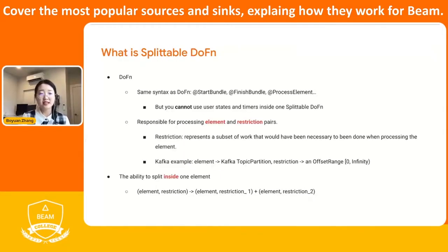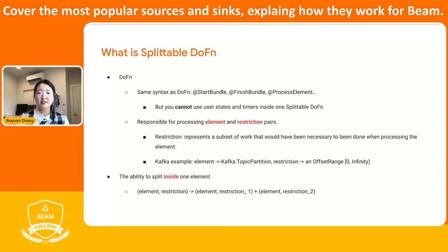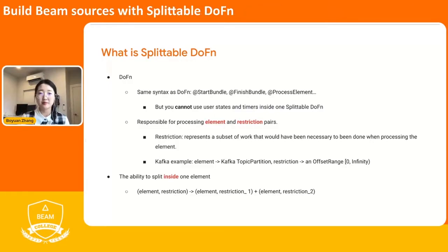So given that, let's switch to what is Splittable DoFn. Based on the naming, you can see that Splittable DoFn has two parts. First, it's a DoFn, and then it's Splittable. It being a DoFn means it has all the same syntax as a DoFn, so it's pretty simple and straightforward to current Beam users. You still can use start bundle, finish bundle, and process element for your Splittable DoFn. The process element is always the major function body for your Splittable DoFn.